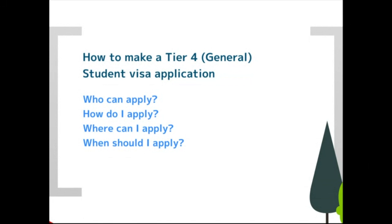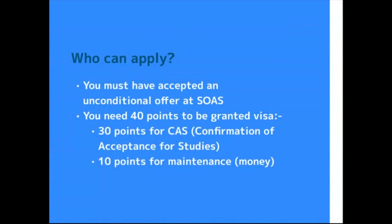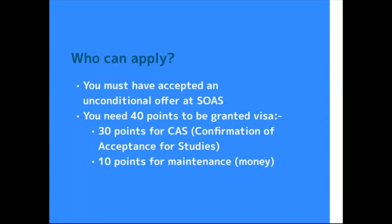So, who can apply? You must have accepted an unconditional offer at SOAS before you can apply for your Tier 4 visa. You'll also need to have secured your 40 points. That 40 points breaks down into two sections: 30 points for your CAS — your Confirmation of Acceptance for Studies — which is an electronic document assigned to you containing a unique reference number. That reference number you'll need to put onto your visa application so they can link your application to your place at SOAS.